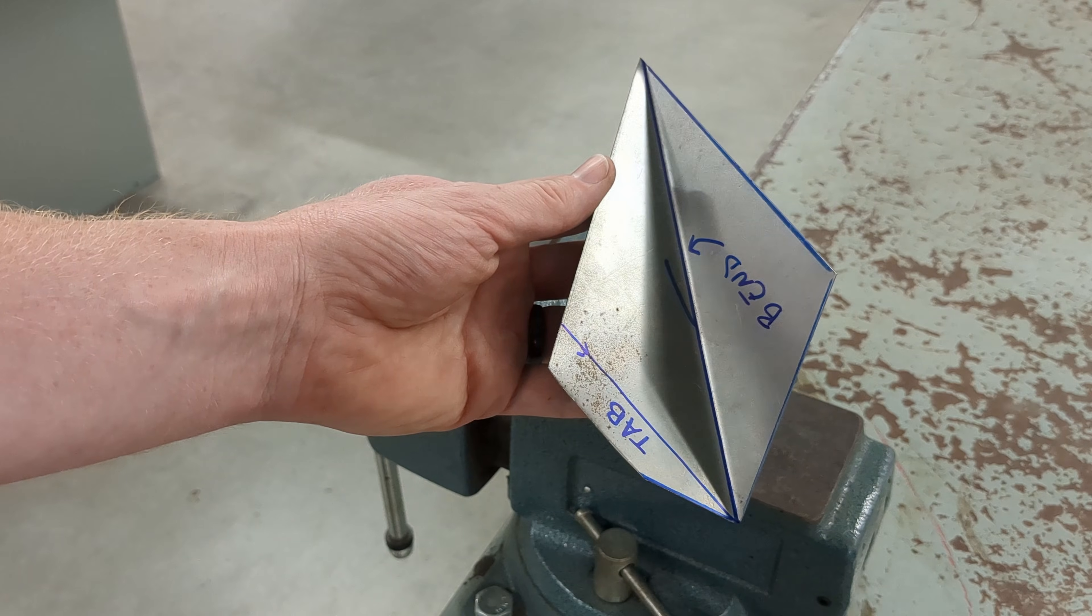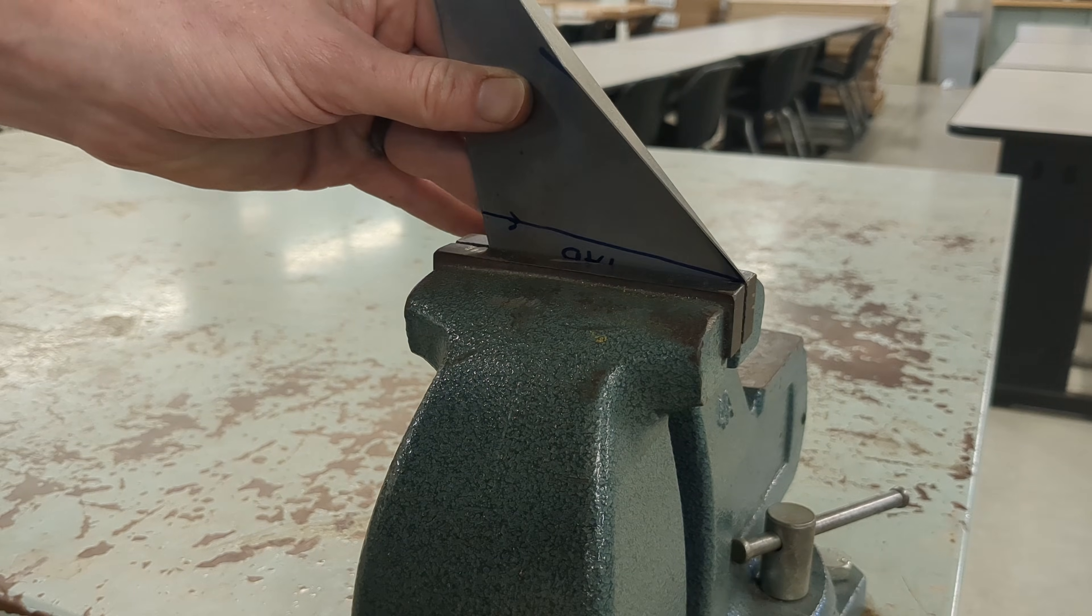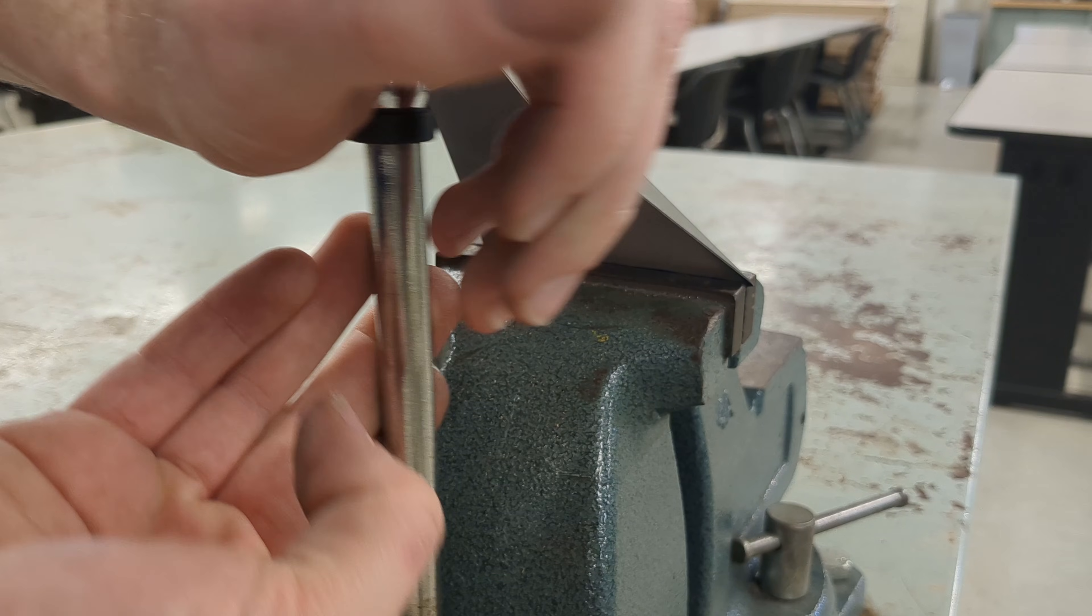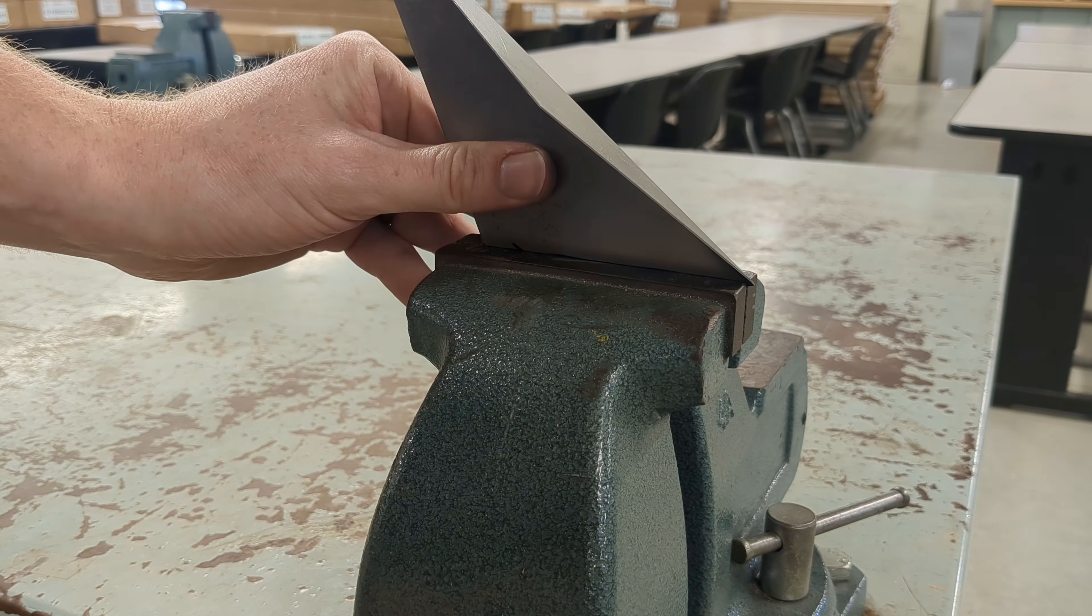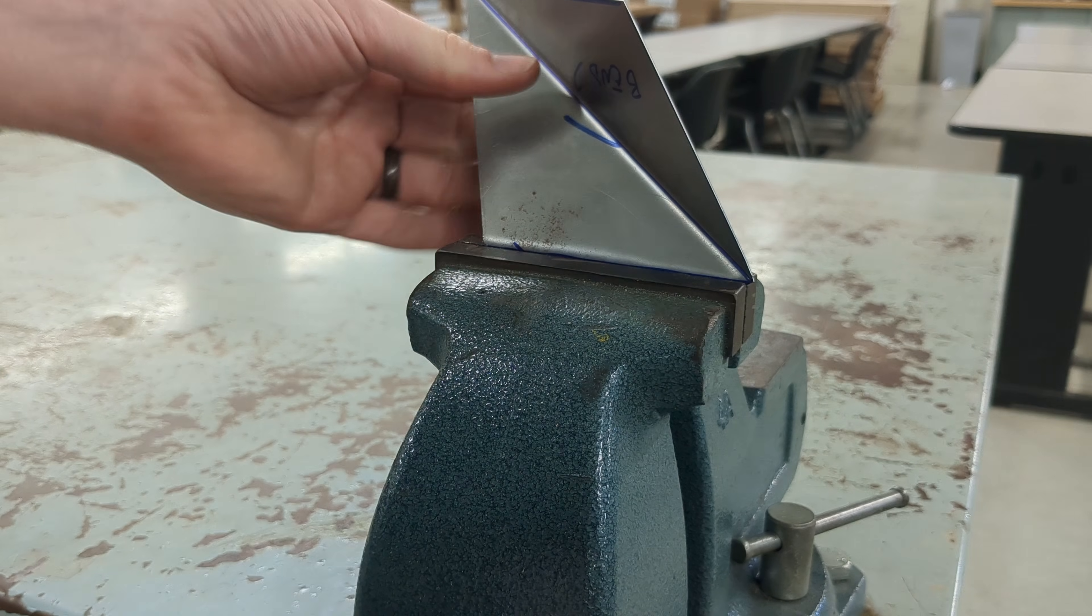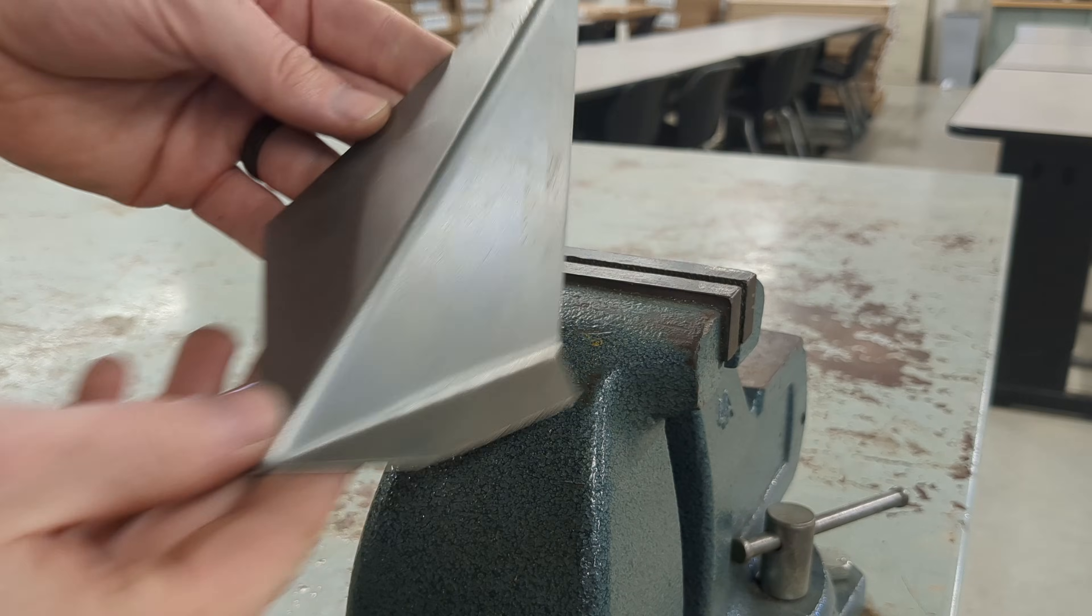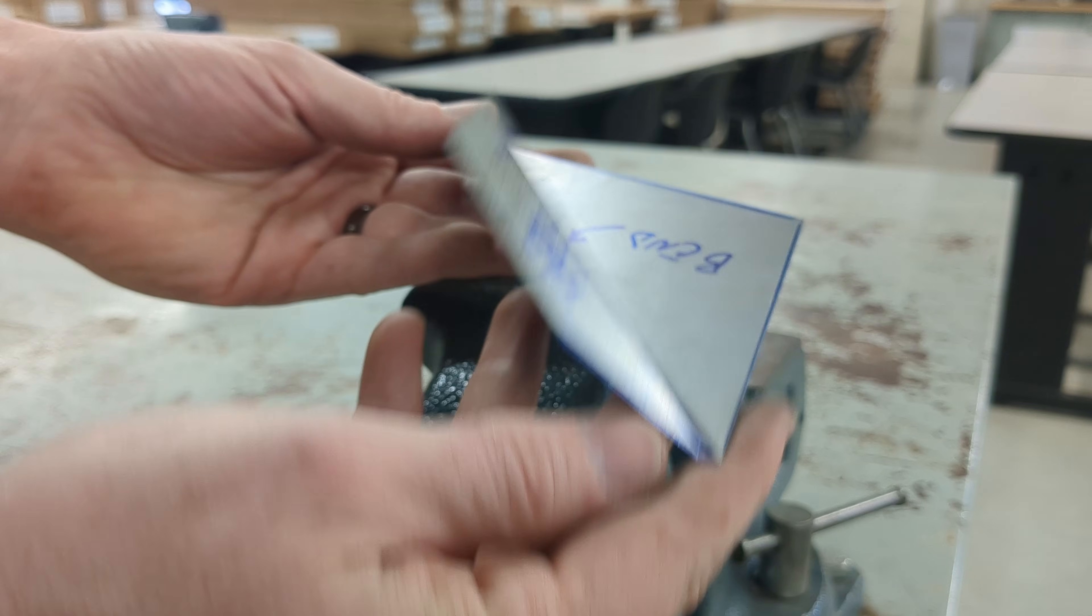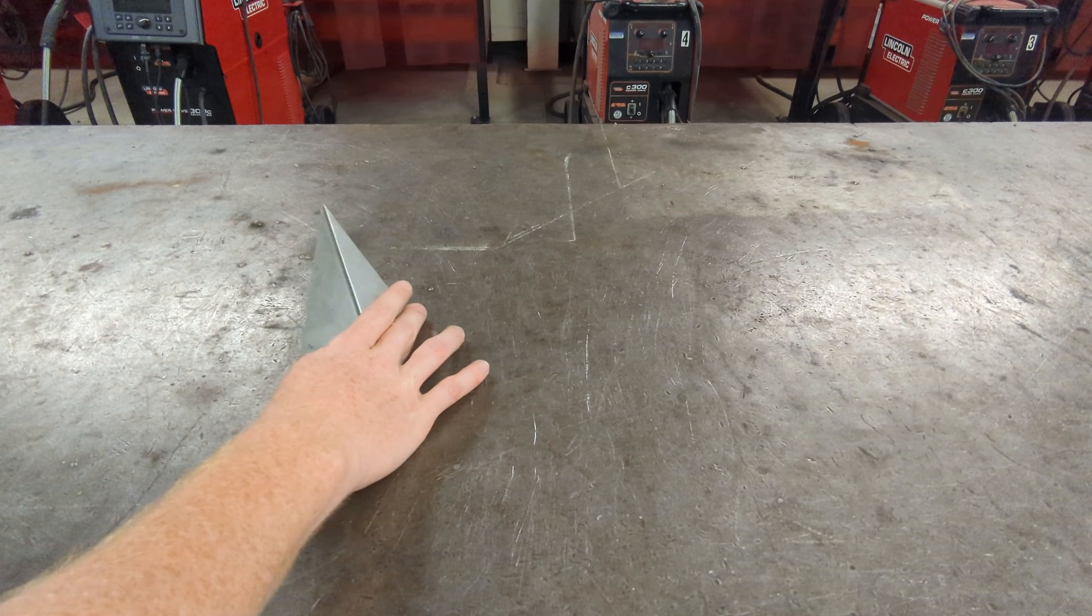The tab needs to bend in an opposite direction of what we just did. To do that, lock it in a vise on the line and bend it by hand somewhere between a 45 and 60 degree angle. And just like before, repeat for the rest of your parts.